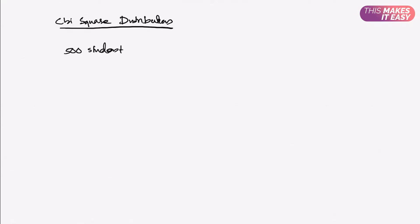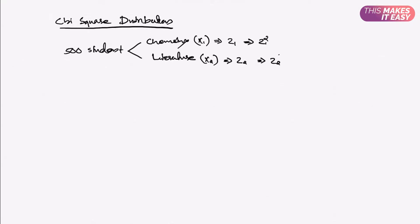This might be a little confusing and complex, so I will explain with an example. I am taking scores of 500 students in chemistry and literature. I call the marks in chemistry x1 and literature x2. I will standardize the scores to get z1 and z2, then square them — z1 squared and z2 squared — and sum the squares. This sum is the sum of squares of two independent standard normal random variables.